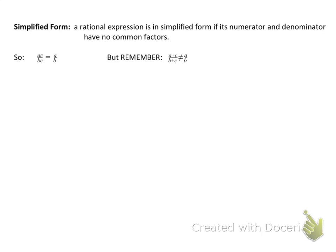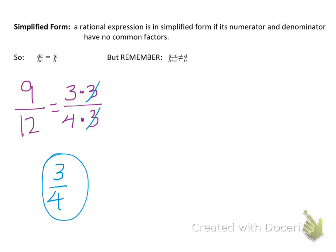Let's take a look at exactly what this means — we're talking about factors. We can recognize that 9/12 can be simplified. We can rewrite 9 as 3 times 3, and 12 as 4 times 3. We cancel out those common factors of 3, and we're left with 3/4.